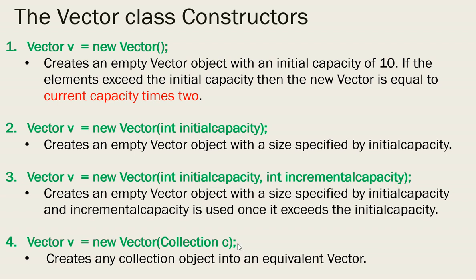Finally, the fourth constructor takes a collection object. Any of the collection objects can be passed and it will be converted to an equivalent vector array. These are the four constructors you have to know under the vector class — they are all very important. Please go through them thoroughly, and once done with this, I will be going through the program. I will come back for the next slide in the next video. Thank you.